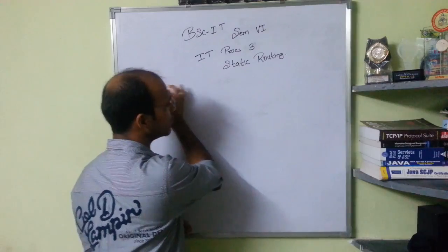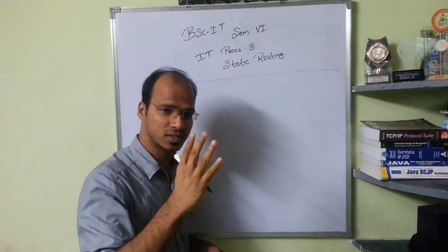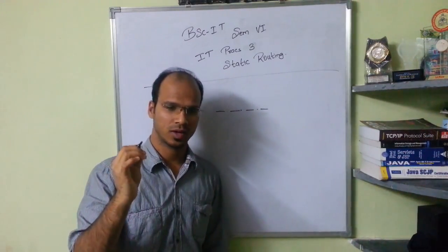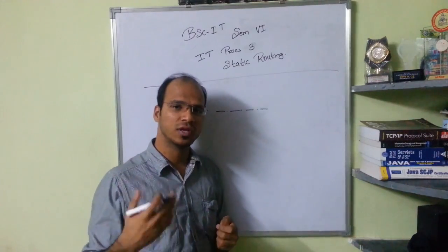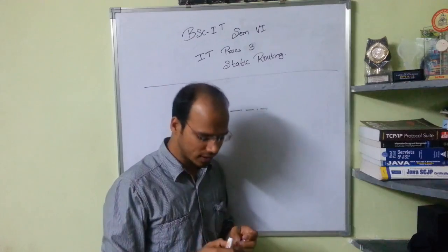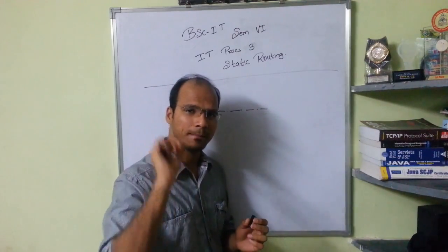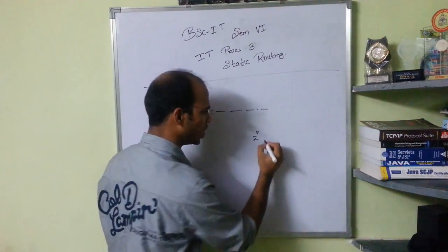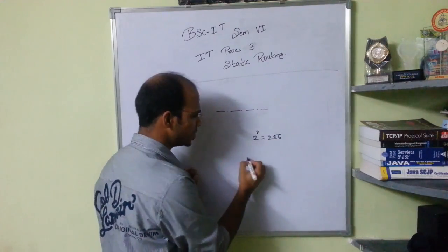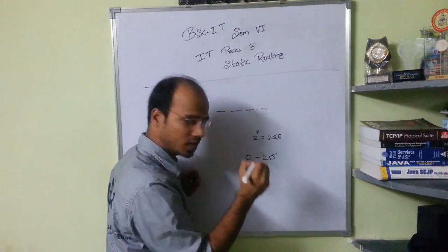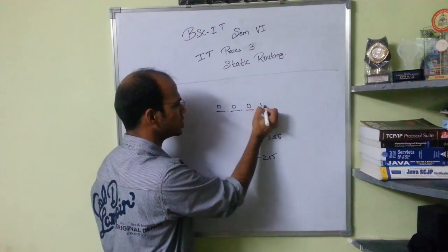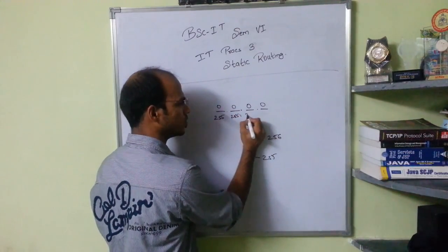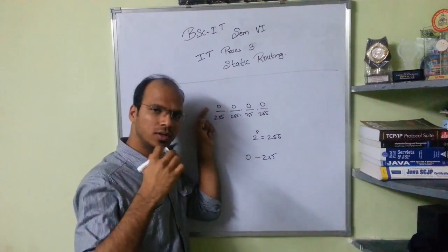An IP address has four octets. Each octet deals with eight bits — so eight bits, eight bits, eight bits, eight bits — which overall gives you 32 bits. You have four octets, or you can say four bytes. Since each octet is eight bits, the maximum number it covers is 2 to the power of 8, which is 256. So the numbers start at zero and end at 255.